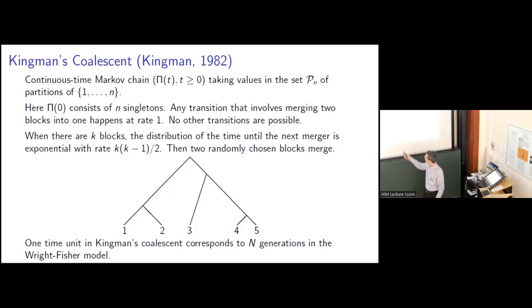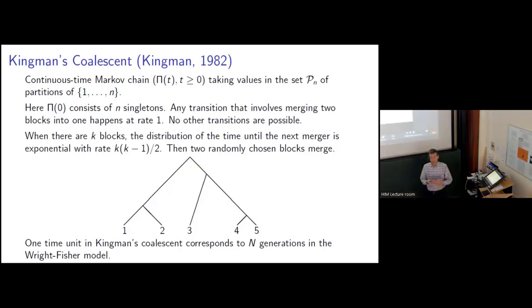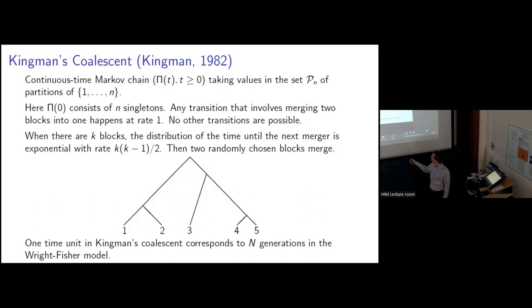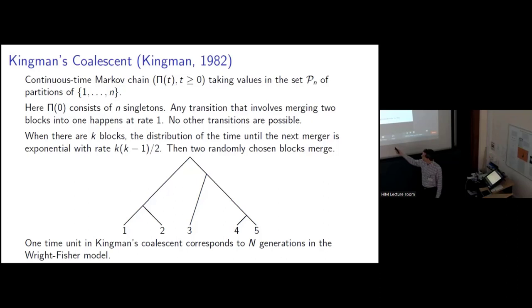Here is a picture of Kingman's Coalescent started with a sample of five individuals. As we trace back the ancestral lines, first lineages four and five merge, then one and two merge, then three merges with four and five. And finally, the last two lineages merge, and at that point the entire sample has been traced back to one common ancestor. Notice that one time unit on the Kingman's Coalescent timescale corresponds to N generations in the Wright-Fisher model.